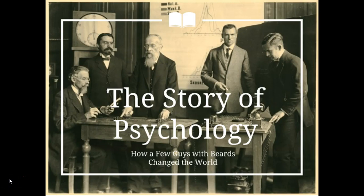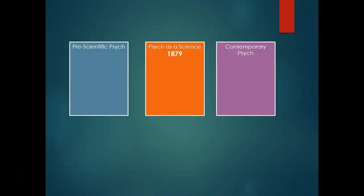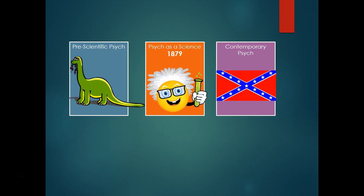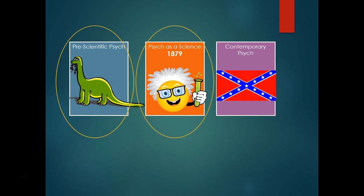Now that we understand the philosophical and ancient undertones of psychology, we're going to look at how it actually became a field of its own and turned into a science. Just to review from the last video, we know that we've got three different eras of time in psychology: the pre-scientific, the scientific, and then contemporary. We've already done pre-scientific, and today we're going to take a look at psychology as a science.